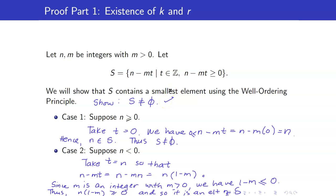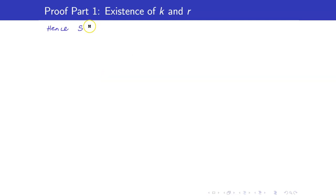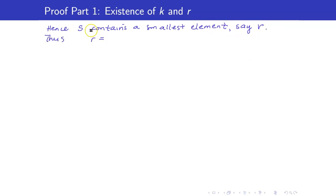The second condition for the well-ordering principle requires that the elements be non-negative integers only, which is satisfied since we require n minus mt to be greater than or equal to 0. Therefore, S contains a smallest element by the well-ordering principle. Call this smallest element r. Since r is an element of S, it equals n minus mk for some integer k.